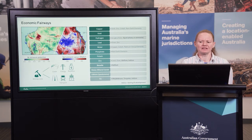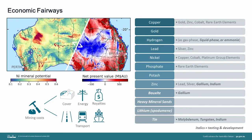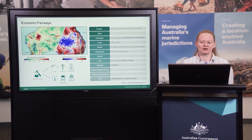Once we have produced mineral potential maps that evaluate the geological potential of an area, it is then important to understand the economic viability of a project in that area. The Economic Fairways Mapper combines large-scale infrastructure and geological datasets to evaluate the mining, processing, administrative and infrastructure expenses of mining operations across Australia with a spatial context. All of these factors are combined to provide a rapid high-level spatial estimate of economic viability or potential that allows economic considerations to be evaluated much earlier into the initial stages of mineral exploration.